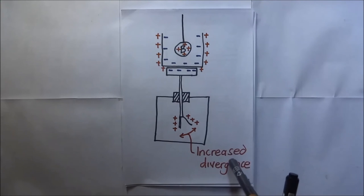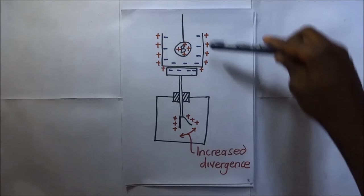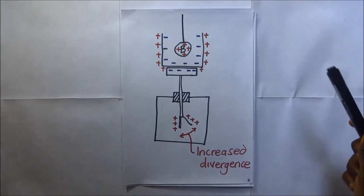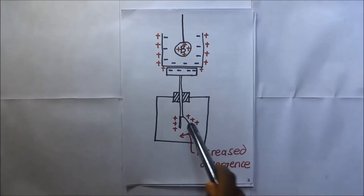So the divergence will increase. This increased divergence simply shows that the charge outside this ice pail is actually the same as the charge that is on the electroscope, which is positive.